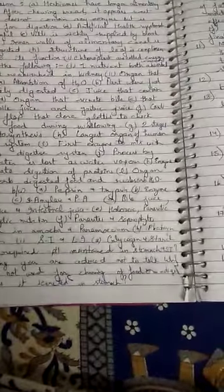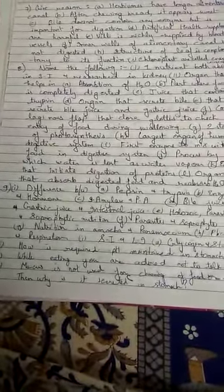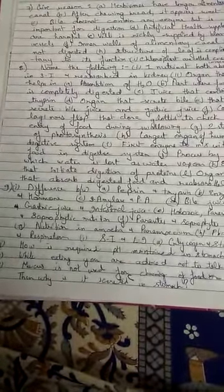Mucus is not used for churning of food or digestion. Then why is it secreted in the stomach? It is secreted in order to prevent exposure of HCl and pepsin to the stomach wall, so that they will not digest or erode the stomach itself.